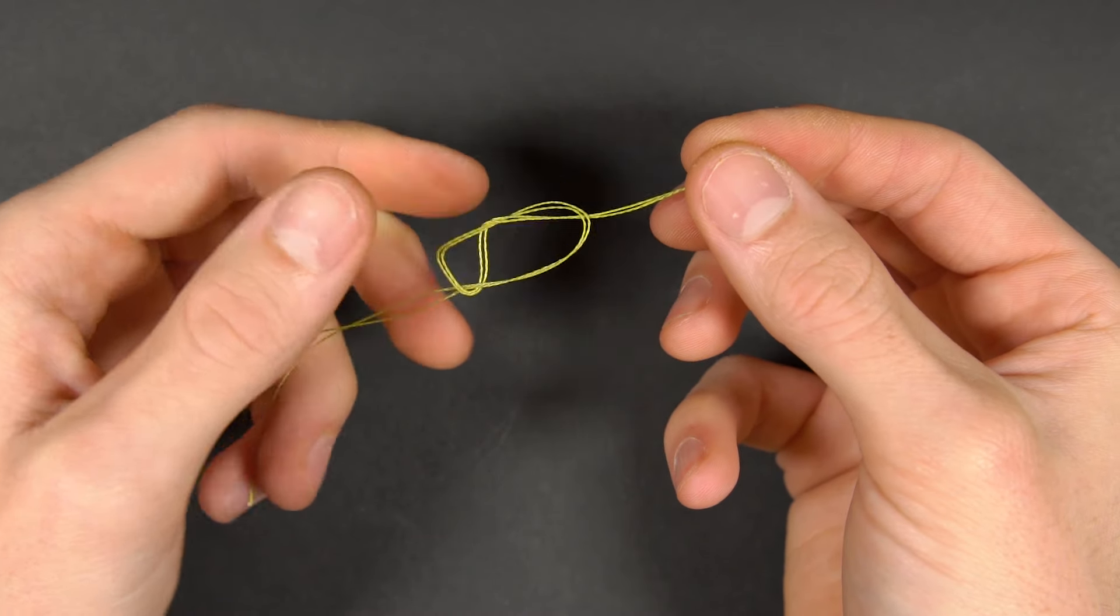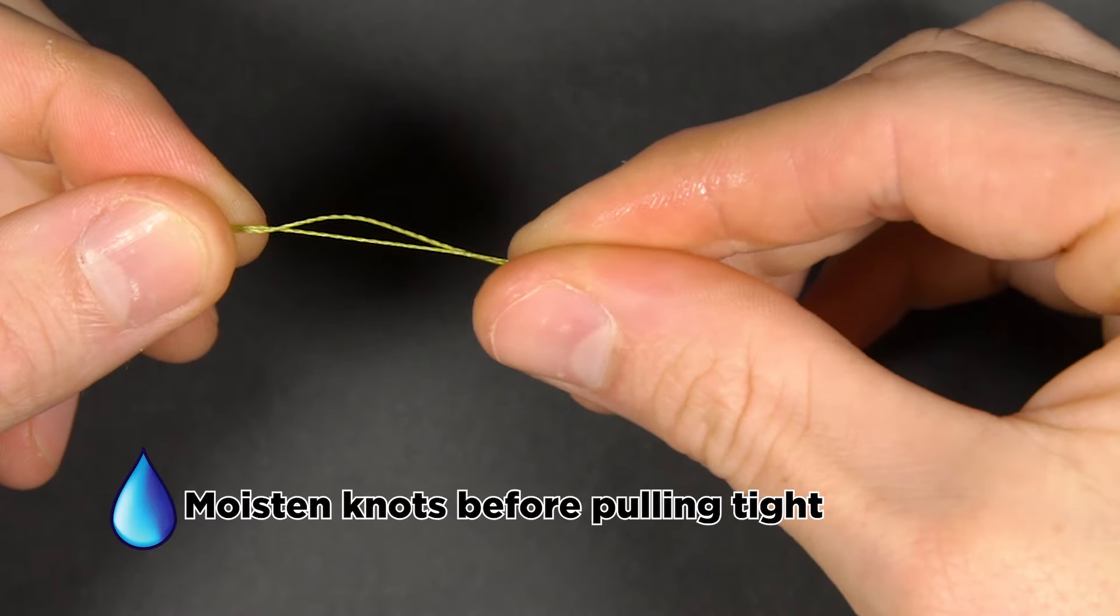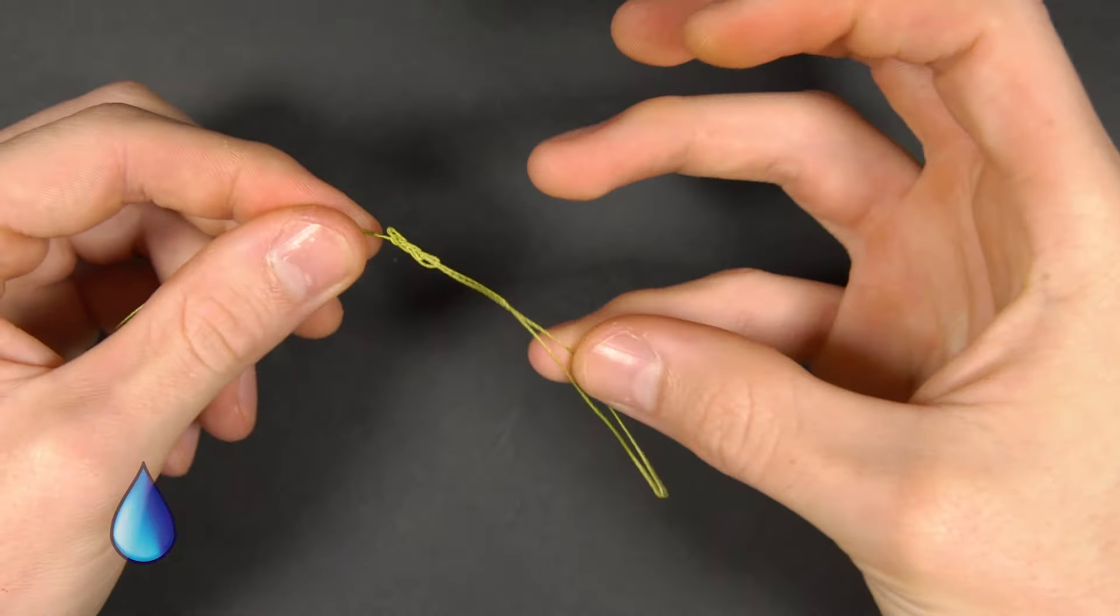Pull it semi-tight pulling on the main line loop and tag together. Wet the line with saliva to ensure friction doesn't melt the line and then pull it really tight.